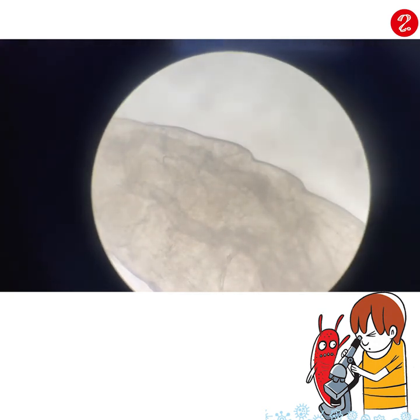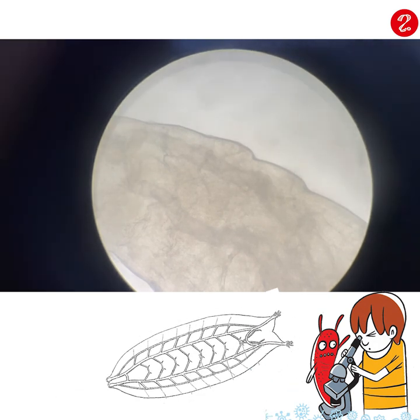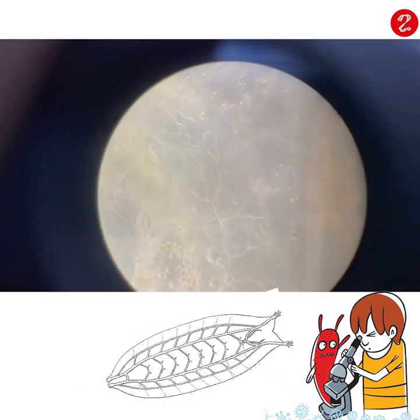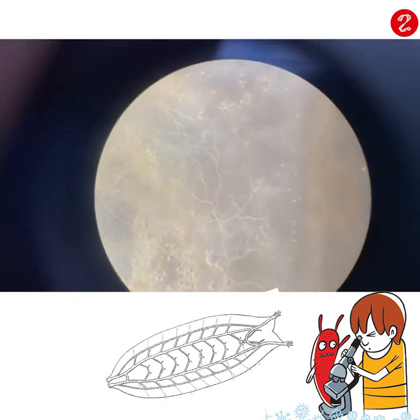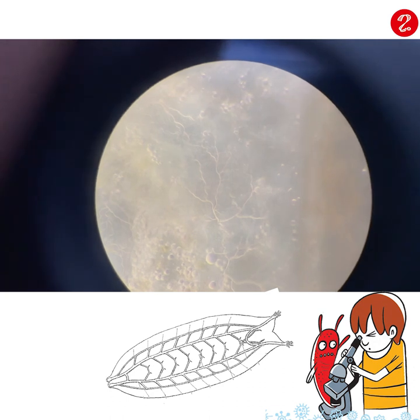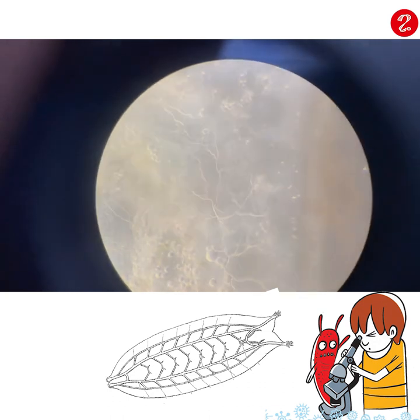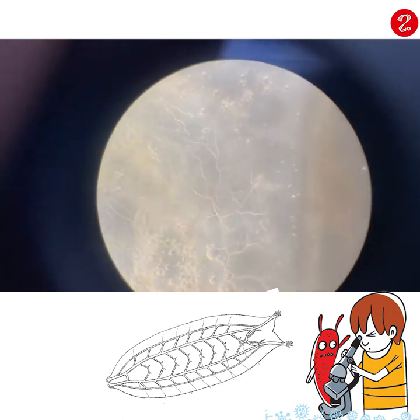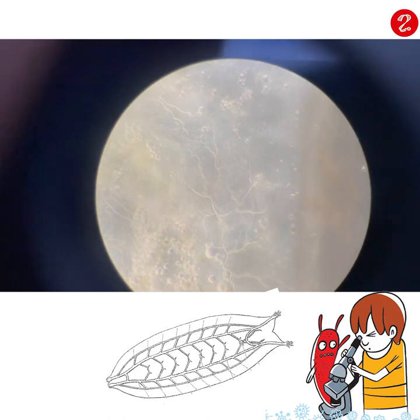This is the tracheal system — a very small tube. This is the air bubble. Here, we can see the air flow.